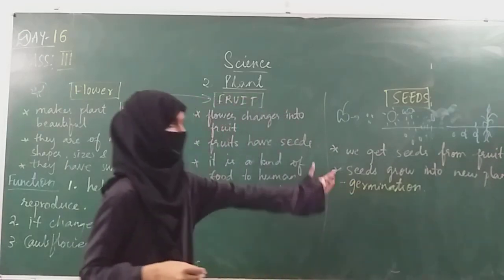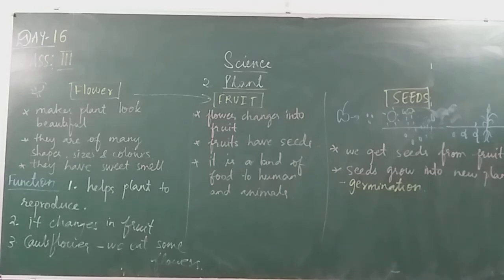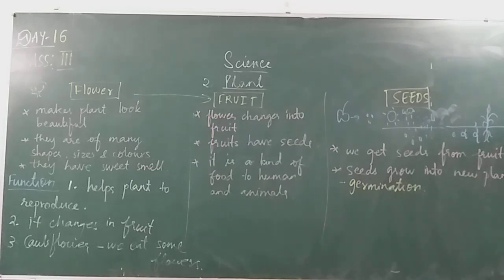The process by which a seed grows into a new plant is called germination. When we sow a seed in the soil and water it with sunlight available, a new plant grows from it. Roots grow in the ground, a shoot comes out with small leaves and stem, and that is how a seed grows into a new plant. This concludes our lesson on parts of the plant: roots, stem, leaf, flower, fruit, and seed.